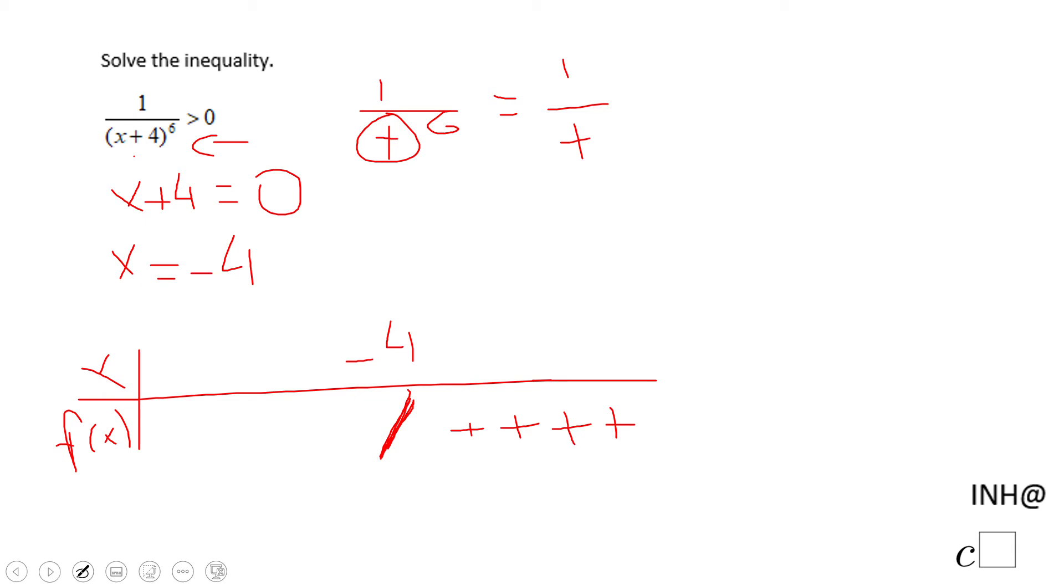Now let's go to a number less than negative four, like negative five. We're going to get one over negative five minus four—that's a negative number raised to the sixth power. Whenever you raise a negative number to an even power, you get a positive value. So we end up with a positive value here.